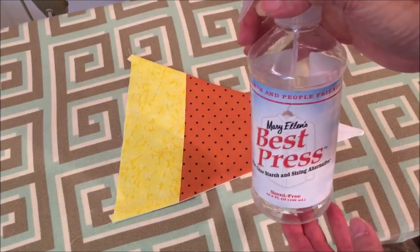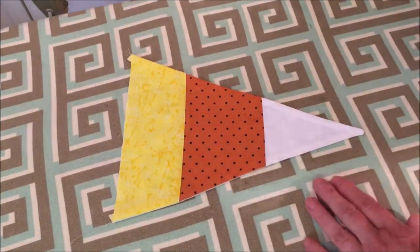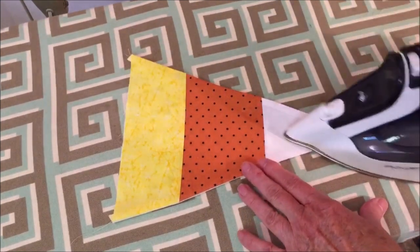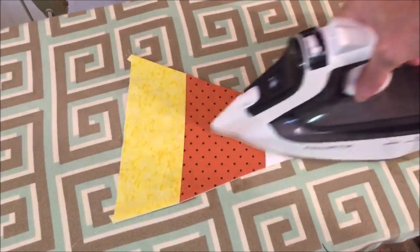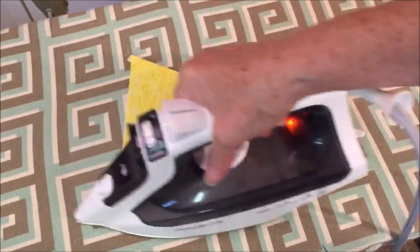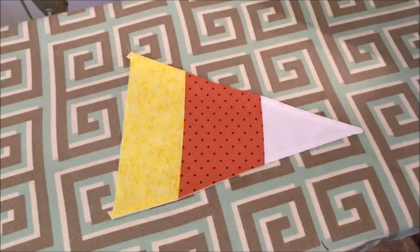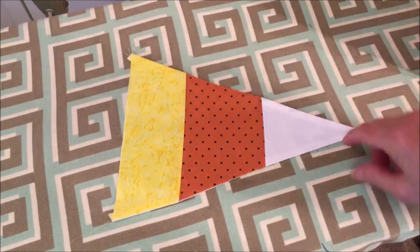I'm going to use a little more of this Best Press. Just to make it a little stiffer. And so it holds its shape. Now another thing you can do. I'm not going to do. But you could. Is you could edge stitch all the way around here. If you'd like.